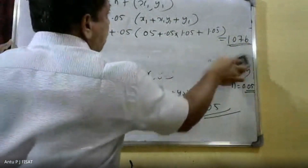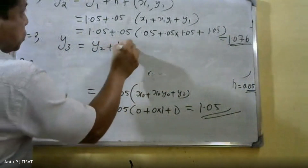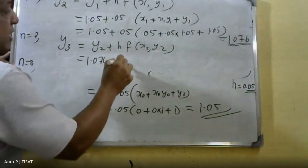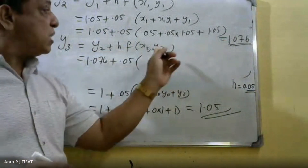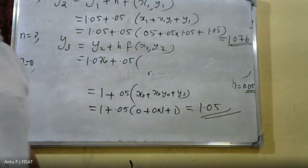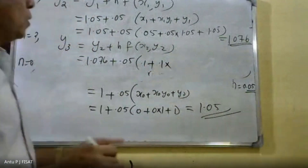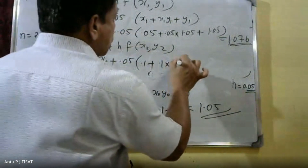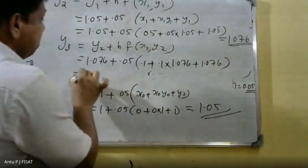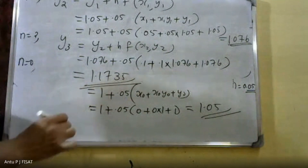Similarly, to find y_3, put n = 2. Therefore y_3 = y_2 + h · f(x_2, y_2). Here y_2 = 1.076, h = 0.05, and x_2 = 0.1. Substituting: y_3 = 1.076 + 0.05 · (0.1 + 0.1·1.076 + 1.076). Simplifying, we get y_3 = 1.1735.